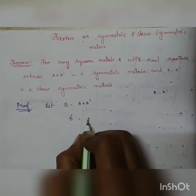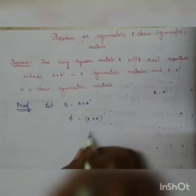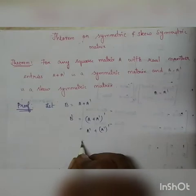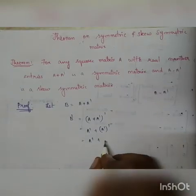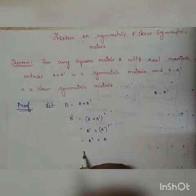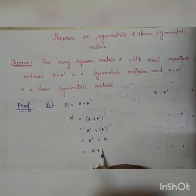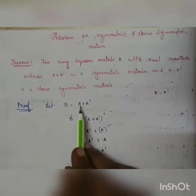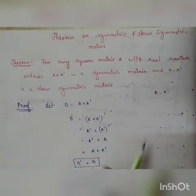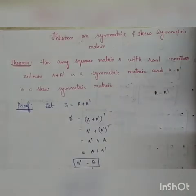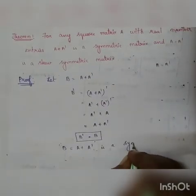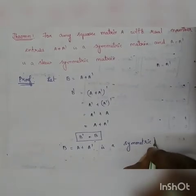B transpose means the transpose of the whole expression A plus A transpose. Applying the transpose gives A transpose plus the transpose of A transpose, which is A transpose plus A. Since A transpose plus A equals A plus A transpose, this is equal to B. We have found that B transpose equals B, so A plus A transpose is a symmetric matrix.